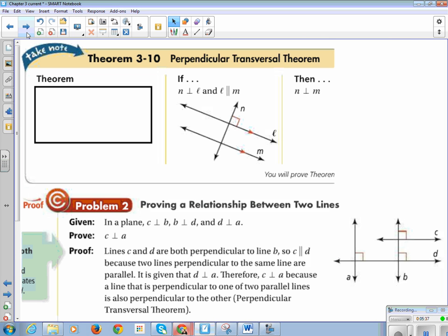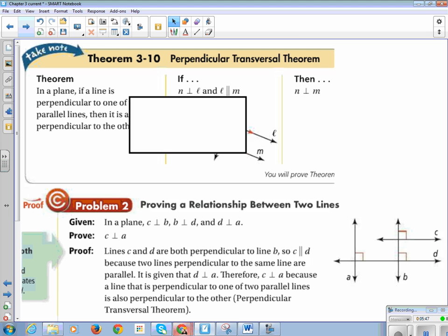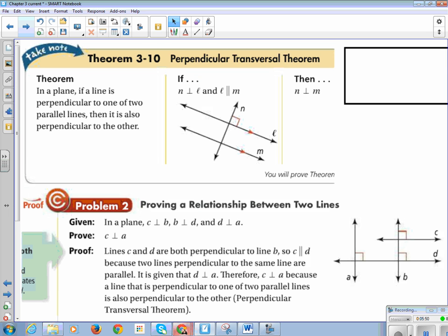All right. 3-10, Perpendicular transversal theorem. The perpendicular transversal theorem says in a plane, if a line is perpendicular to one of two parallel lines, then it's also perpendicular to each other. So if we've already established that the lines are parallel, and we know that one of those lines is perpendicular to a transversal, we can say that it's also perpendicular to the other one.